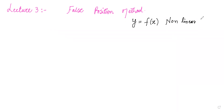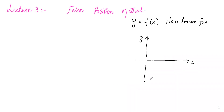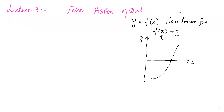Let's suppose we have a nonlinear function and the graph of this equation looks like this. This is our x-axis, this is our y-axis, and the graph is a nonlinear curve. If we are asked to solve f(x) = 0, we have to find the values of x at which our f(x) becomes equal to zero. From the graph, we can see that value.